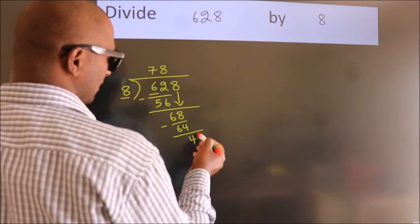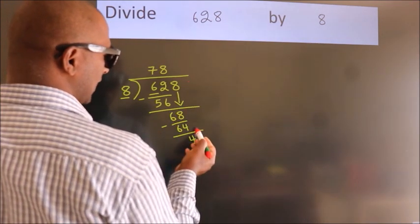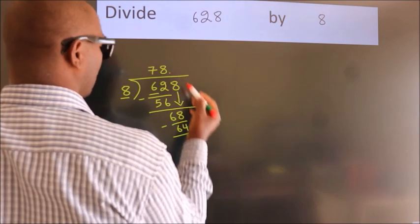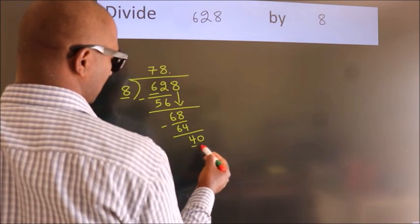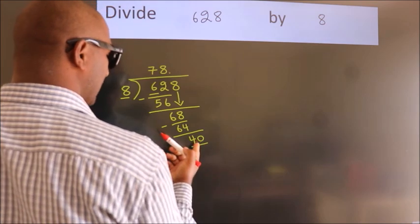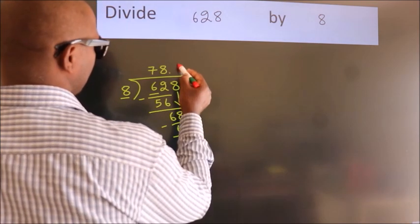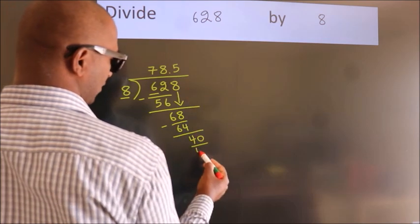After this, no more numbers to bring down. So what we do is we put a dot and take 0, so 40. When do we get 40 in the 8 table? 8 times 5 equals 40.